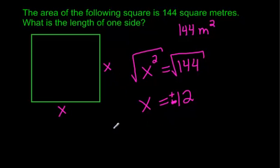So if you wanted to write a sentence answer, you'd say the length of one side is 12 meters. Remember, not meters squared, because that's area. We're just talking 12 meters here, and we are done.